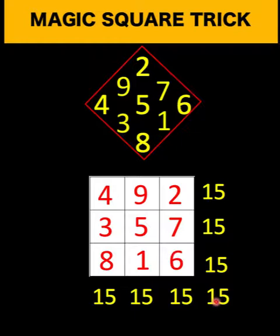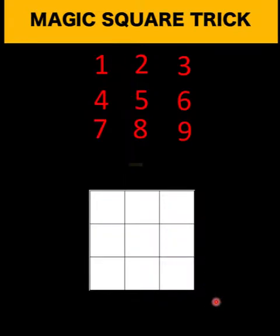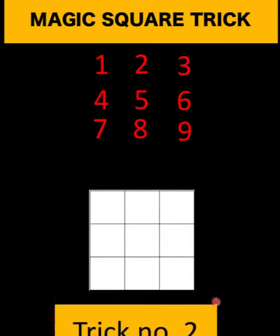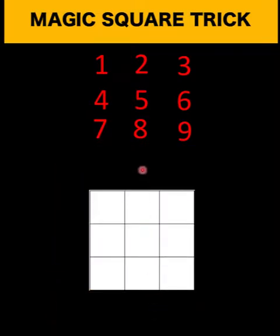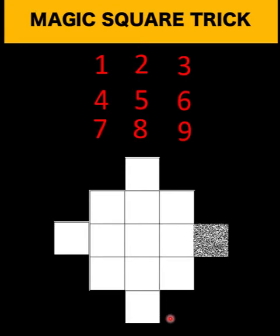Now let's go to trick number 2. Here is our second method. The first step is we are going to form extensions or wings. Then we will transfer these numbers in the first row, 1, 2, 3, in this diagonal here, this way.